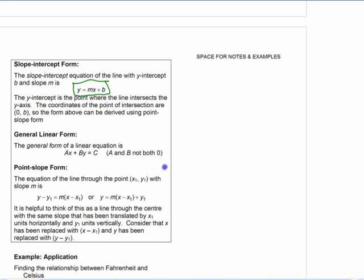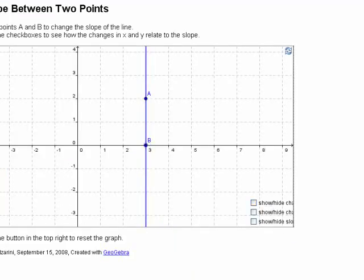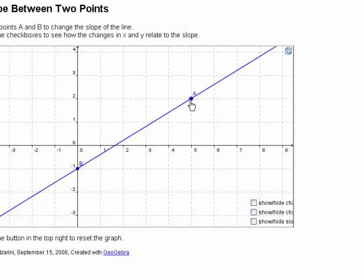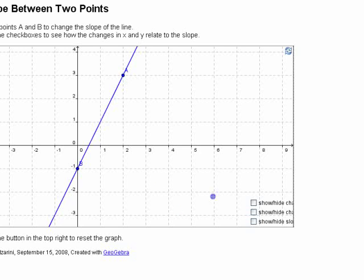And one that you're probably not so used to using is point-slope form. Let's say we have a line that goes through, like that. If we want to give an equation of that line, how many different ways can we write the equation of that line?